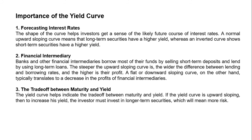The third importance is the trade-off between maturity and yield. The yield curve helps indicate this trade-off. If the yield curve is upward sloping, then to increase yield, the investor must invest in longer-term securities, which means more risk. As discussed in the normal yield curve section, the longer the curve remains normal, the greater the probability it will change — so there is always a risk factor.